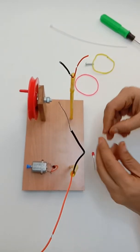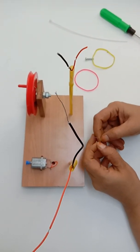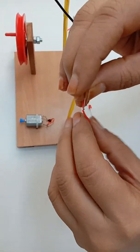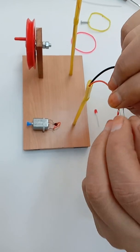Okay, now long terminal of LED is positive. I am connecting this long terminal with this red wire and short terminal with the black wire.